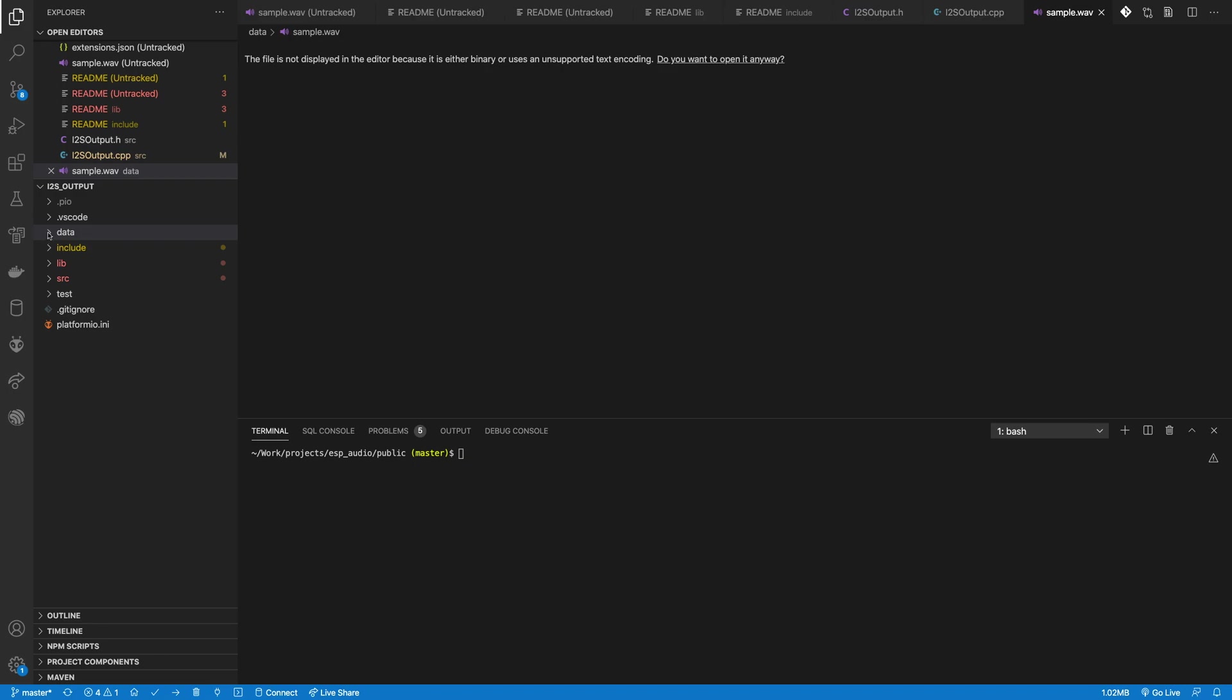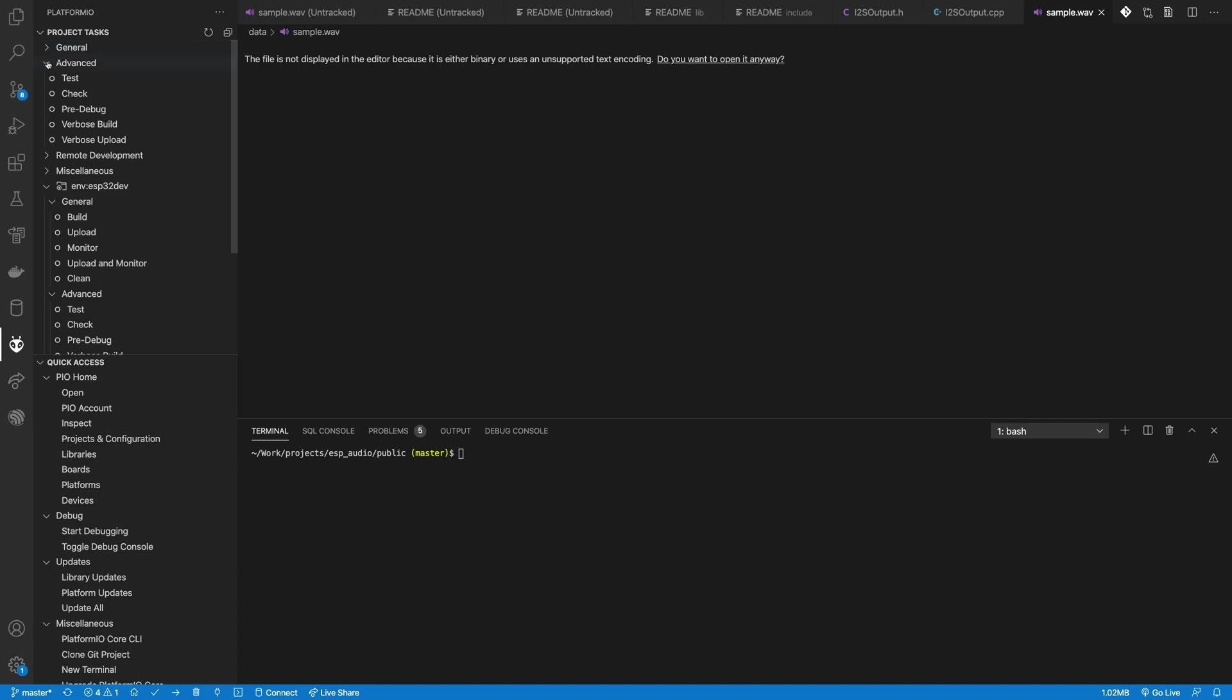We store our audio files on SPIFFS. To do this in Platform.io you put them in the data folder and then to upload the file system command. You click on the Platform.io icon and then find the ENV section of the project tasks. Scroll down and you'll find the upload file system command.